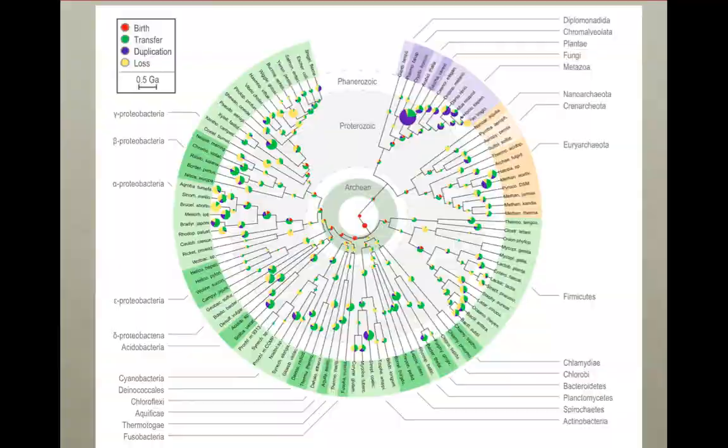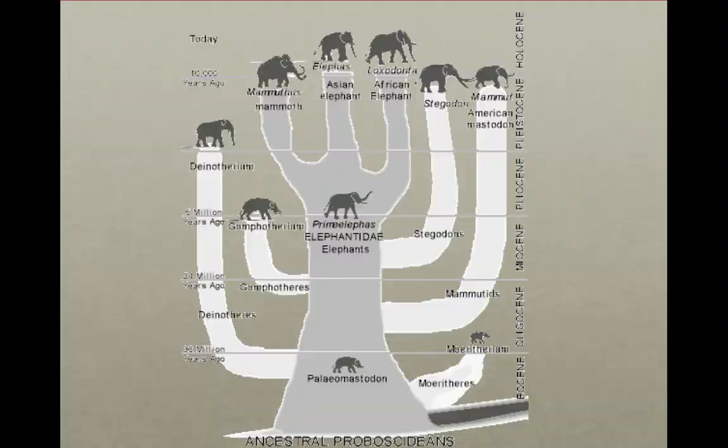The ability to sequence genomes allows us to compare the genomes of different species. Simply put, the more genes two species share, the more closely they are related and the more recent their common ancestor. Comparing genomes of individuals of the same species can also show how closely they are related and give us information about their ancestry.